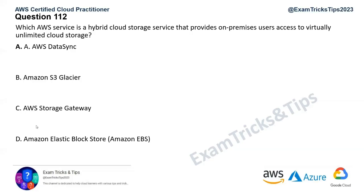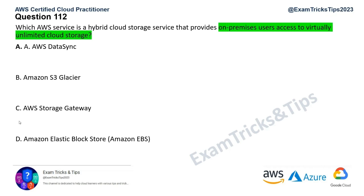Question 112: which AWS service is a hybrid cloud storage service that provides on-premises users access to virtually unlimited cloud storage? Option A, AWS DataSync, is incorrect — it is used for migration of data between on-premises and cloud storage, not for unlimited storage access, and only used at the time of migration.